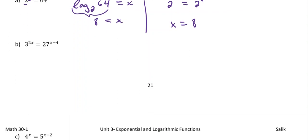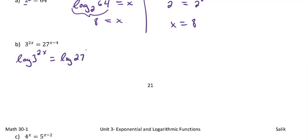This one you're probably thinking: I can change that 27 into a three to the power of something. And that'll work. But what I'm going to do this time, I'm actually going to show you how to do this using logarithms instead. So what we can do is take the log of both sides. I'm just going to leave it as log base 10, so log of three to the power of 2x equals log of 27 to the power of x minus four.